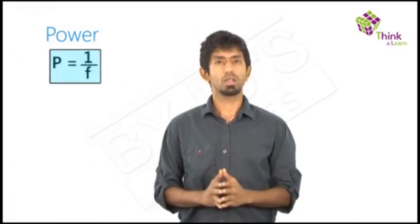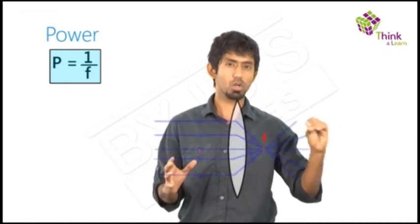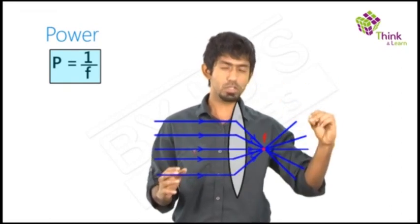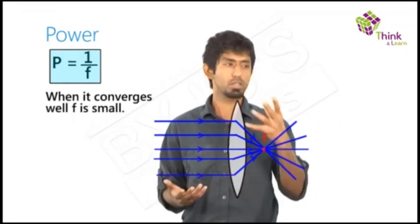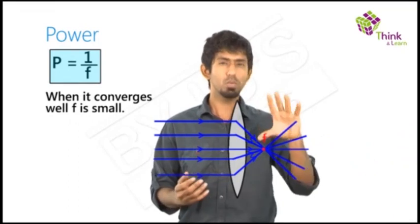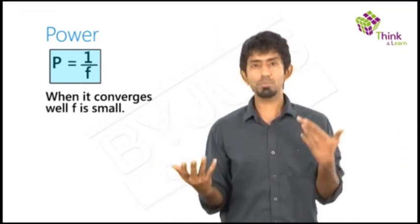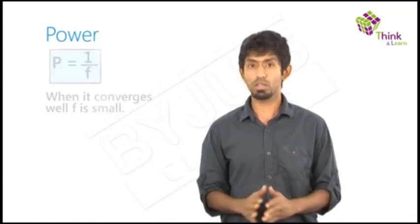So power is simply defined as one by the focal length. Why? The power is trying to tell us how well it converges or how much or how well it diverges. And the better and better it converges, the shorter and shorter the focal length will be, right? Because if it doesn't converge at all very badly, then the focal length will be pretty long. But if it converges really well, then the focal length will be really short. So in one sense, power is inversely proportional to the focal length. So we define it that way. Power equals one by focal length.